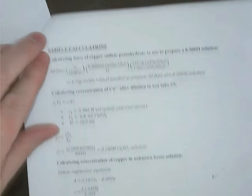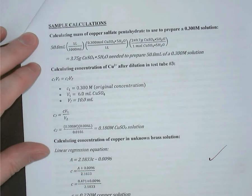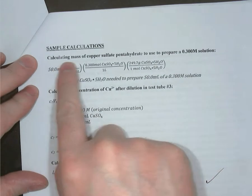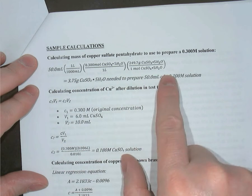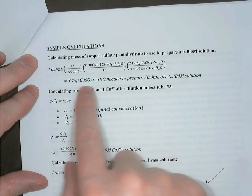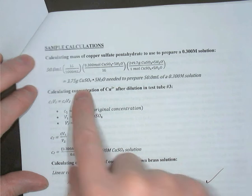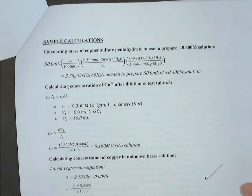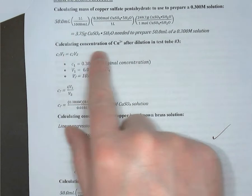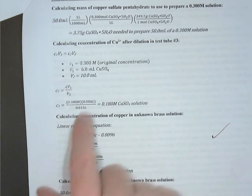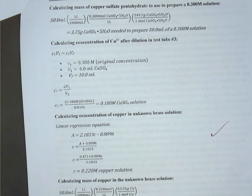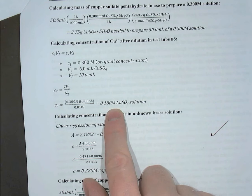The sample calculations section shows calculations for each result from the tables. The calculations are labeled as to what's being calculated. Some use unit multipliers rather than formulas; others use a formula — written out, rearranged algebraically, with numbers substituted in — showing the result with units and attention to significant digits.